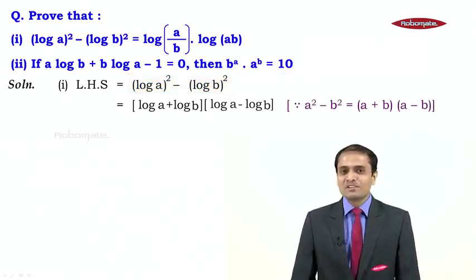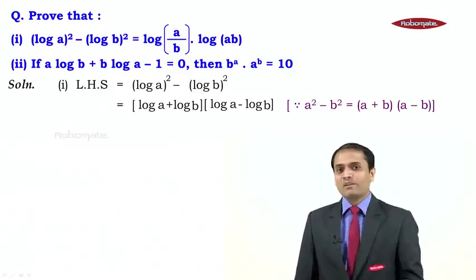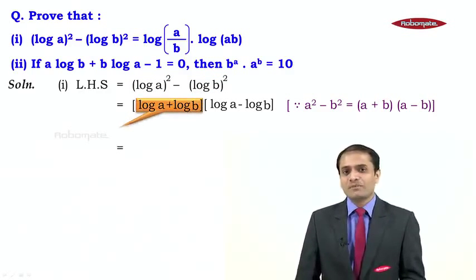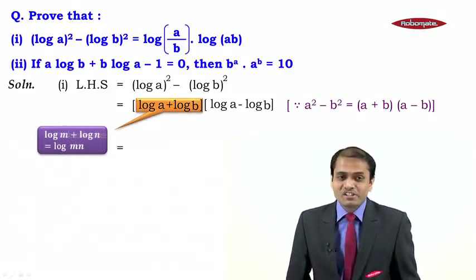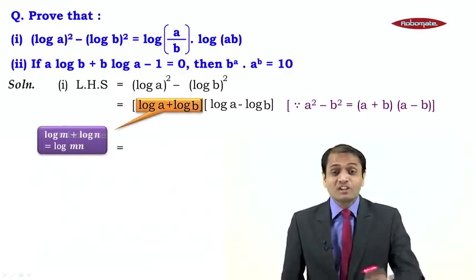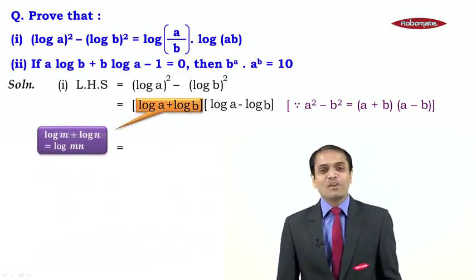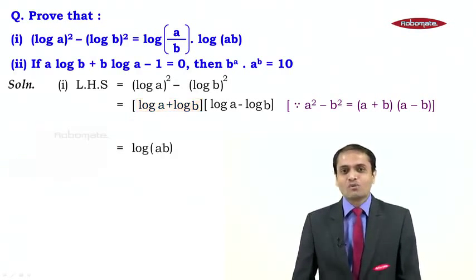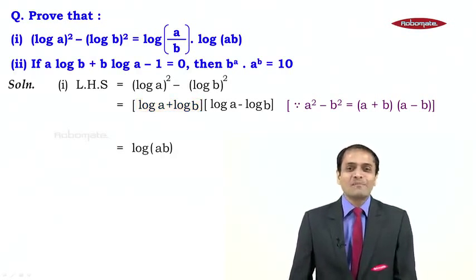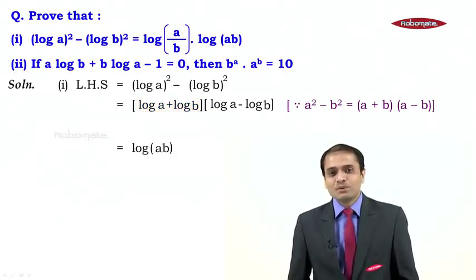Looking at the first bracket: we have log a plus log b — two log terms with a plus sign in between. We can apply the product law, so what we get is log(ab). As we keep comparing this with the given RHS, we are slowly and steadily arriving at the required result.